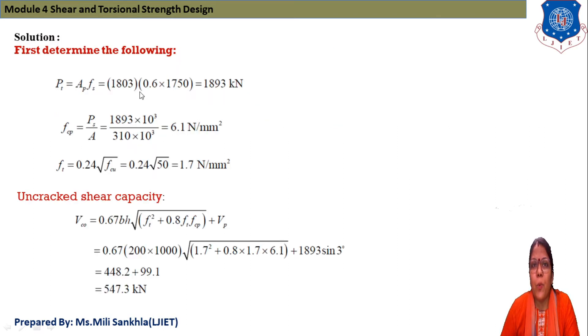Stressed to 60% of its strength in service. So 60% means 0.6 × 1750 and PT we get 1893 kN. Now we find fcp. fcp equals Ps/A and Ps equals 1893 divided by area of section, that is 310 × 10² and we get 6.1 N/mm².